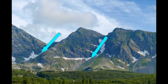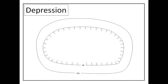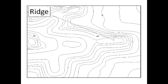Our next physical feature is a depression, which is basically a hole in the ground. Similar to the volcano, you'll see hatch marks on the contour lines. Once again we are going down instead of up — it could be an excavation site of some sort. It's quite simple: it's basically a hole in the ground.